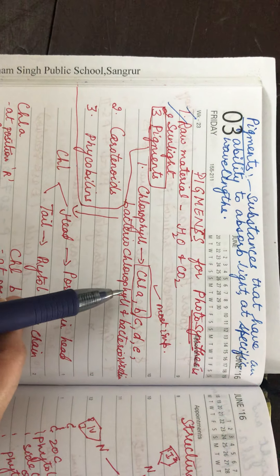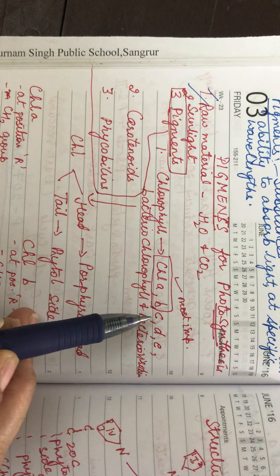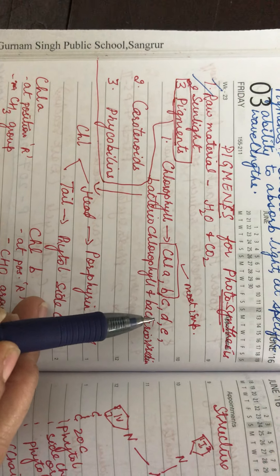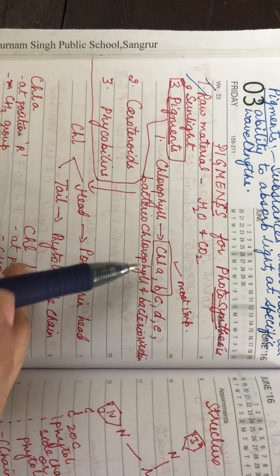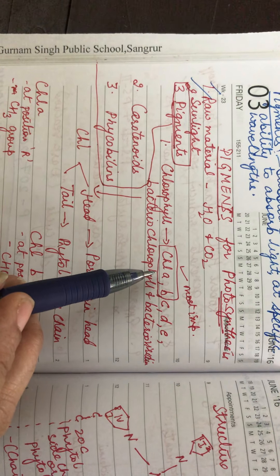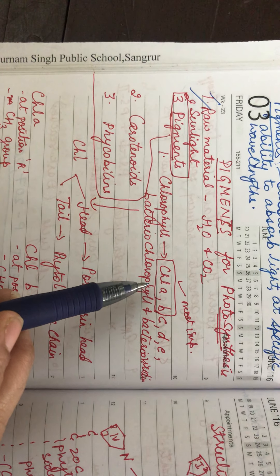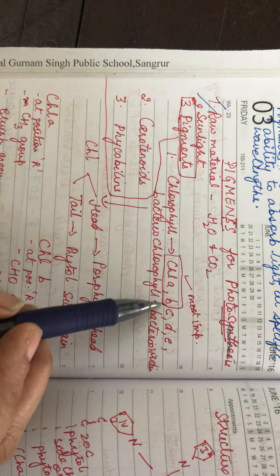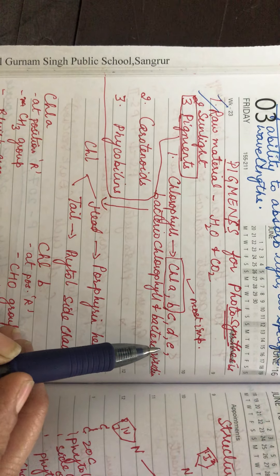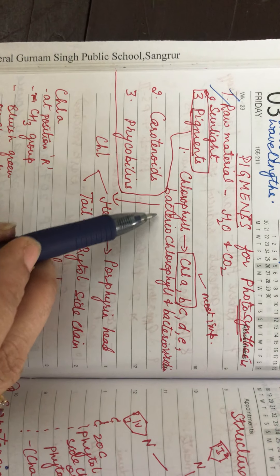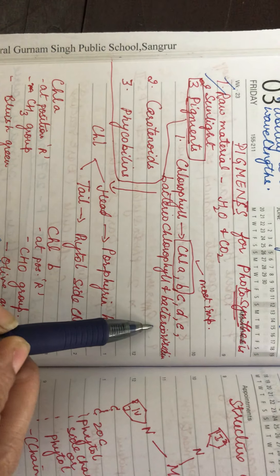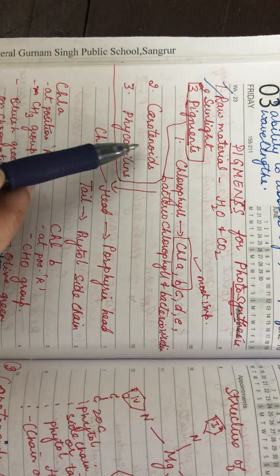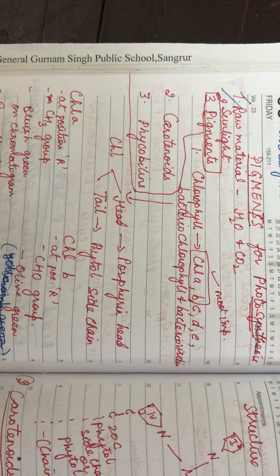Now, chlorophyll. There are five types: chlorophyll A, chlorophyll B, chlorophyll C, chlorophyll D, and chlorophyll E. The most important is chlorophyll A because it is the primary photosynthetic pigment. Chlorophyll B is also important and these are called accessory chlorophyll pigments. Bacteriochlorophyll and bacterioviridine are present in bacteria.